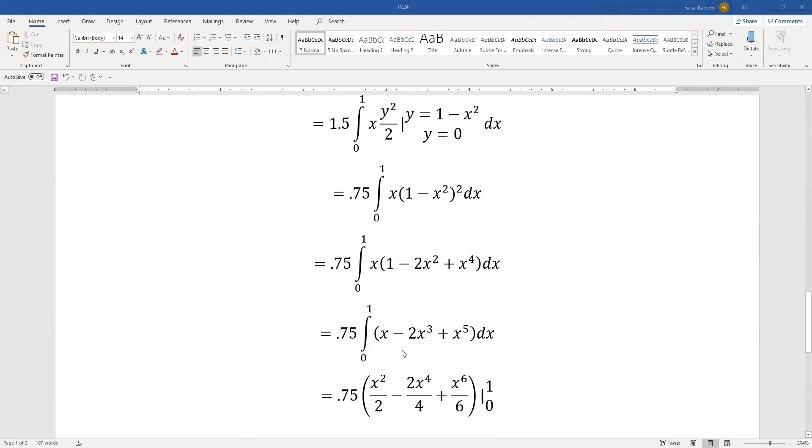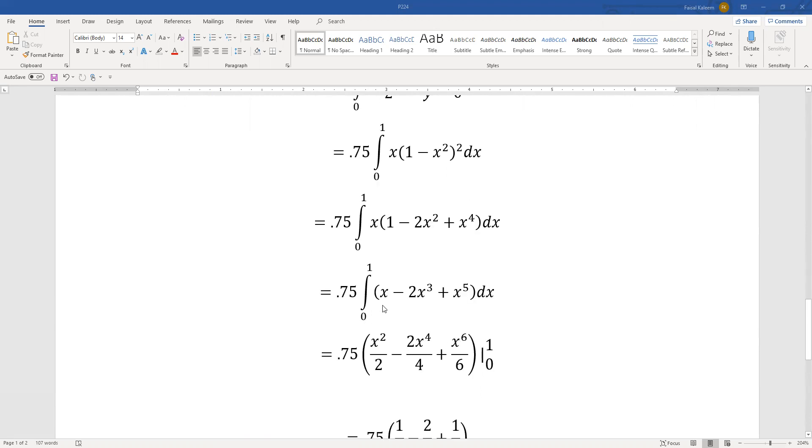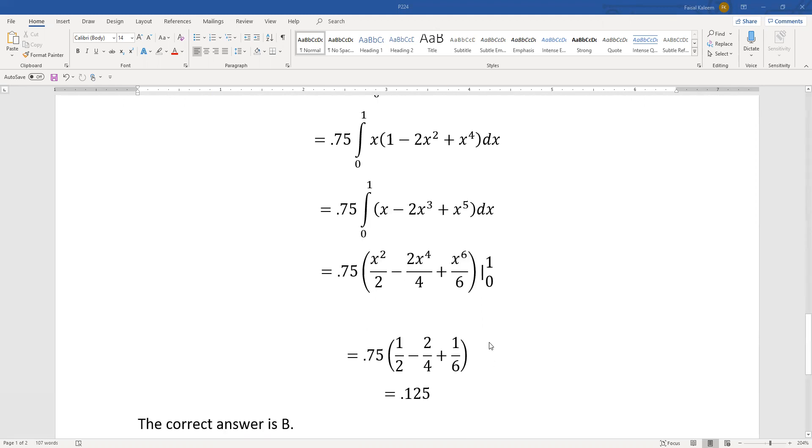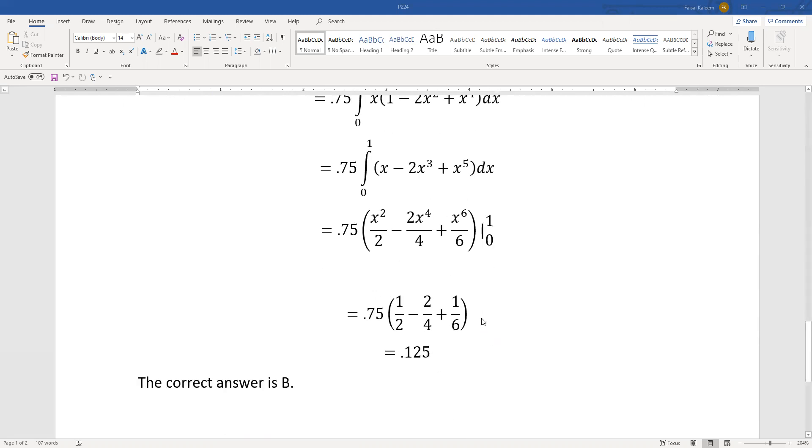Before integrating, we get x minus 2x cubed plus x to the fifth. Now the integral can be taken: x squared by 2 minus 2x to the fourth by 4 plus x to the sixth by 6, from 0 to 1. When we substitute the limits, we end up with 0.125.